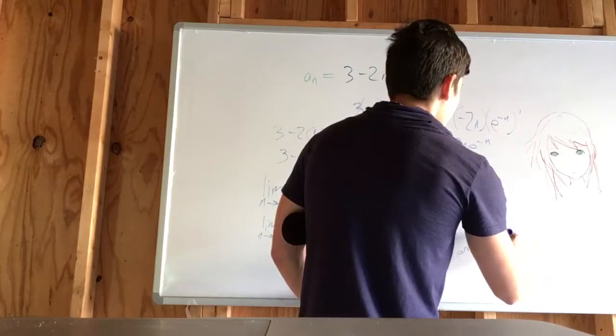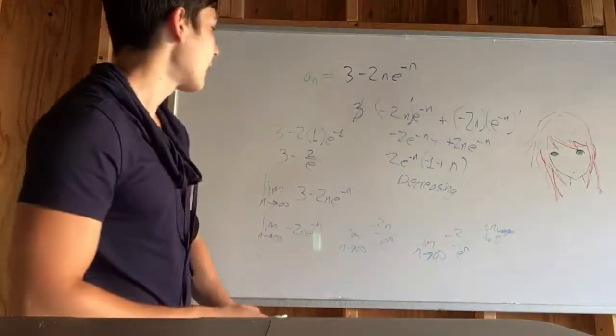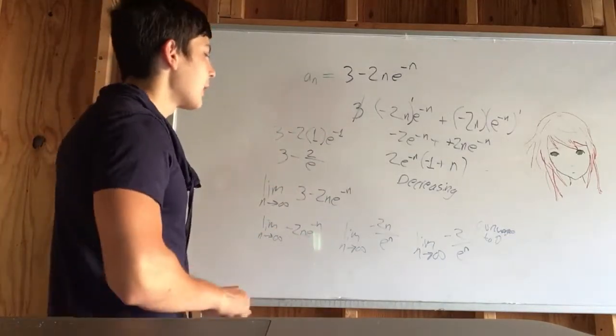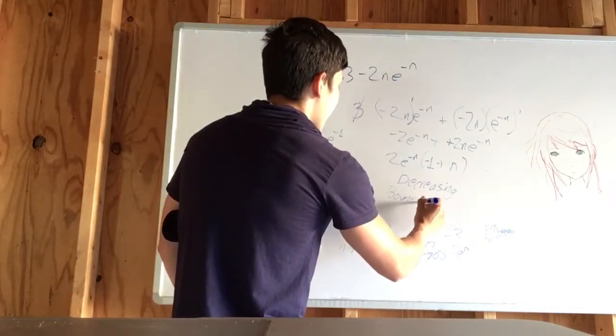It does converge to 0, which means it does have a lower bound. That's its upper bound, that's its lower bound. That means this is a decreasing bounded function, a bounded sequence.